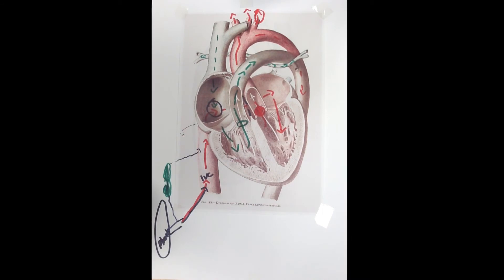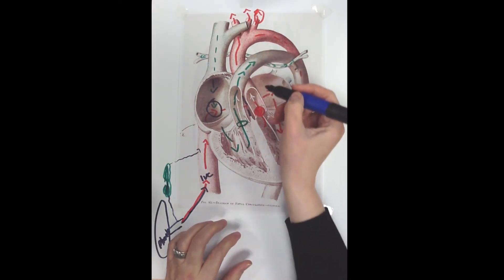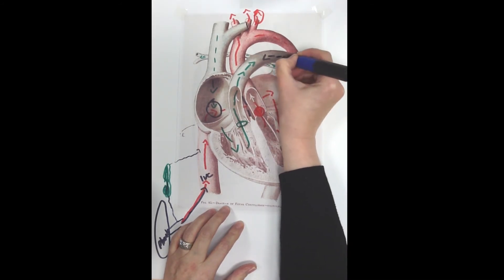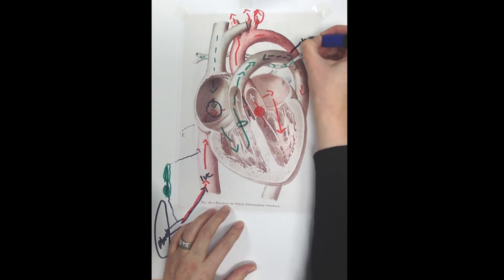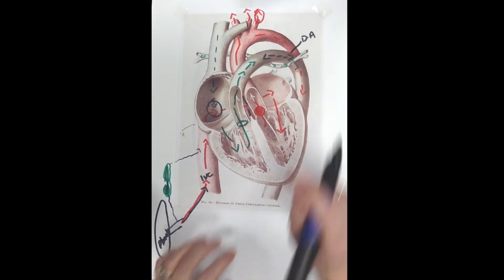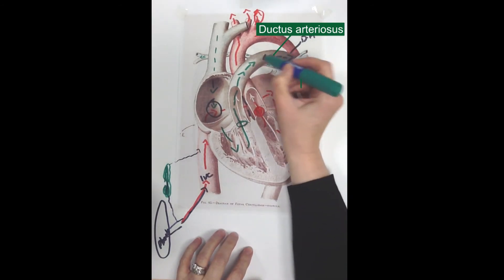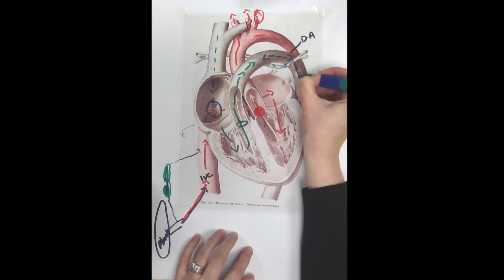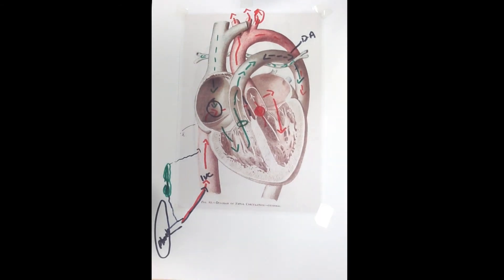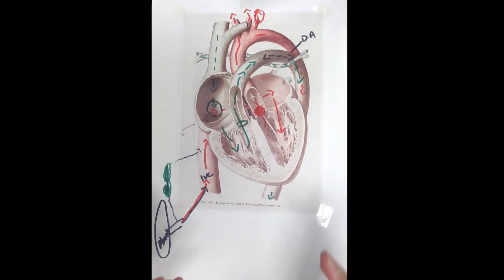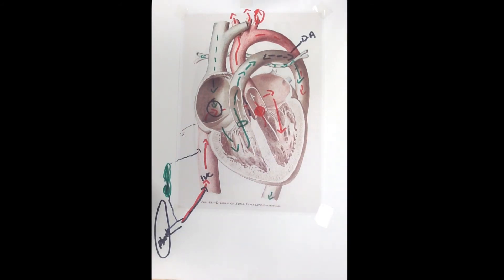The majority of blood is shunted along the ductus arteriosus — a temporary structure that doesn't exist in the adult heart. Blood is shunted from the pulmonary trunk through the ductus arteriosus into the descending aorta, where it mixes with other blood flowing through the heart.